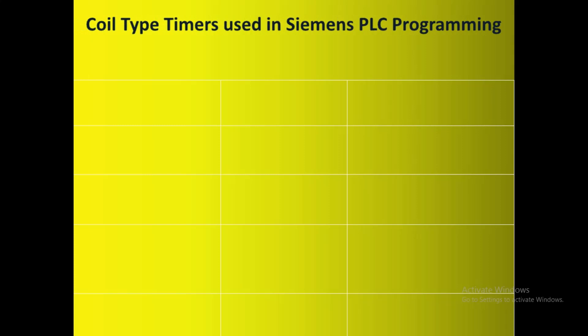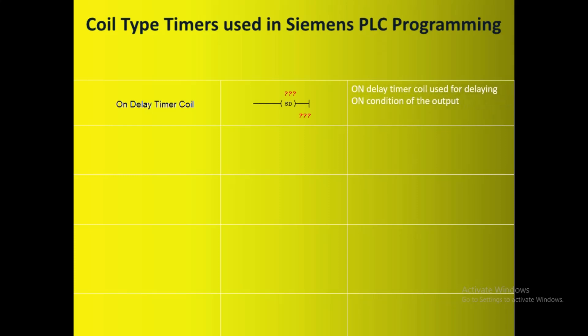There are five different coil type timers used in PLC. The first is the On Delay Timer Coil — this is the notation used in PLC for this timer. It is used for delaying the on condition of the output. This output coil type timer needs one extra input contact to turn on its output. A reset coil from the bit instructions needs to be used separately to reset the timer.